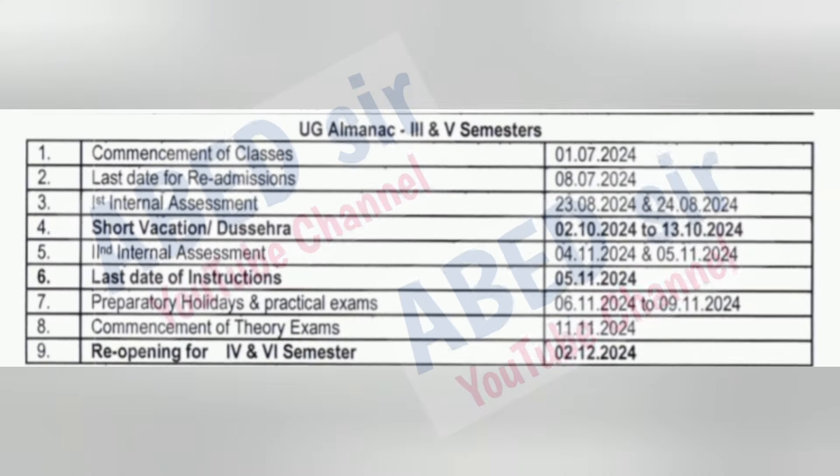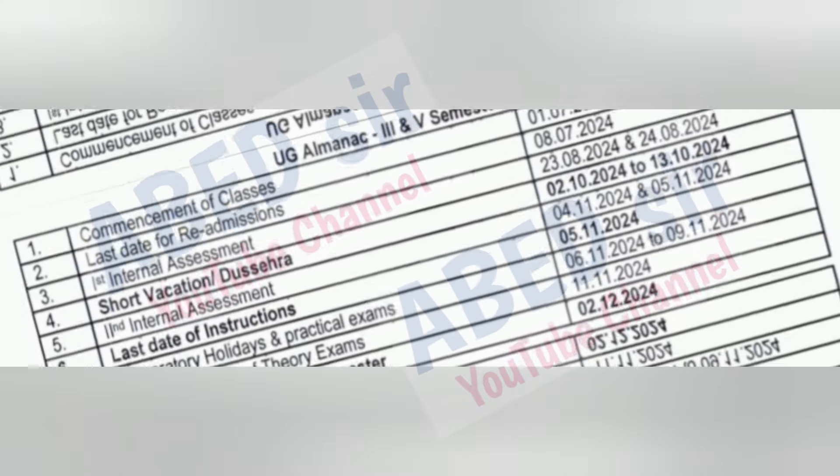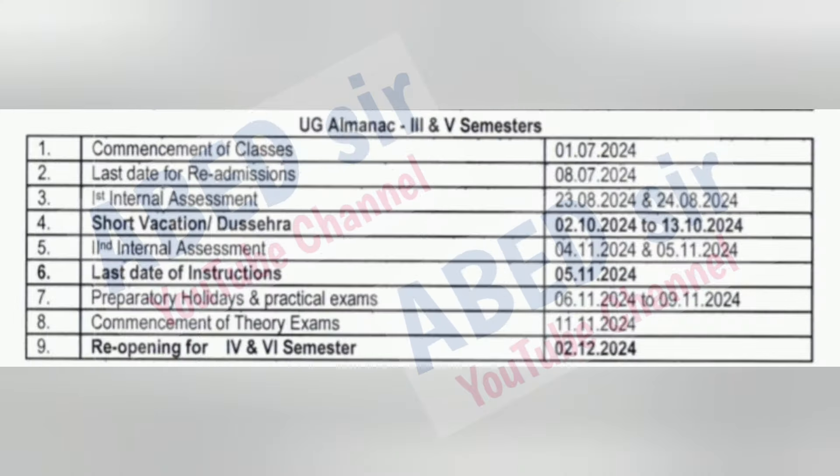Next, third and fifth semester academic schedule. Third semester and fifth semester students, your classes will start from 1st July 2024. Last date for readmissions — this is for those students who are detained and want to take readmission — those students can take readmission on or before 8th July 2024. Other details like first internal exams, Dasara holidays, second internal exams, preparation holidays, practical exam schedule, and semester exam schedule — complete details with dates you can see on screen.